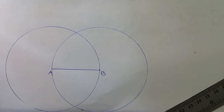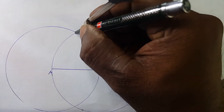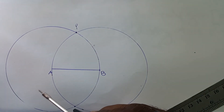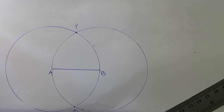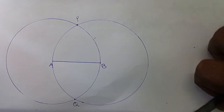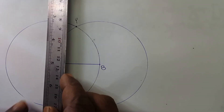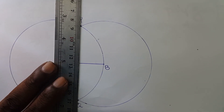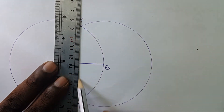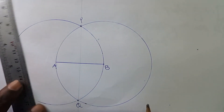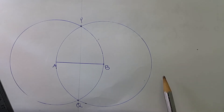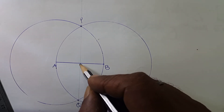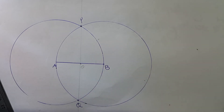Now we have to get two intersecting points. That point is marked as P, and this is called Q. Connecting P and Q, we have to draw a straight line. That line intersects here, and this point is called O.